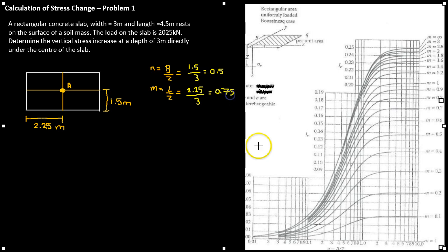If we look at the FADM's chart, we find the point where N equaling 0.5 and M equaling 0.75 intersects, and we can read a value off for the influence factor. I've done it here, shown it in red, so hopefully you can follow how I've read off the FADM's chart. I obtain a value for the influence factor of 0.105.